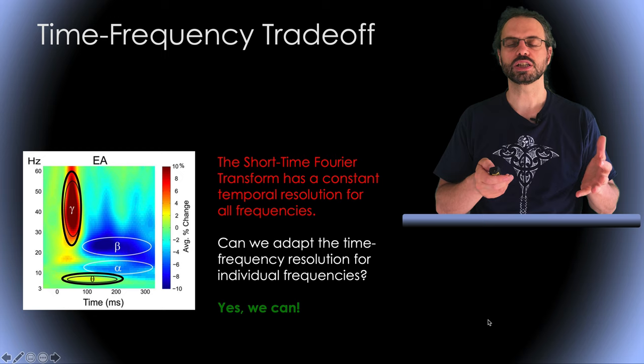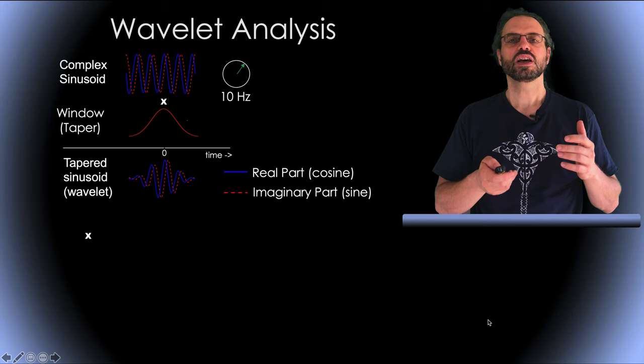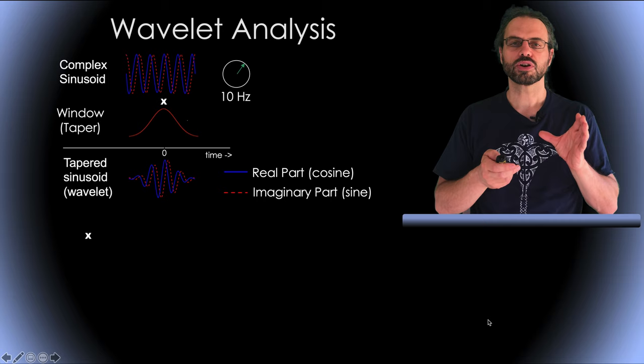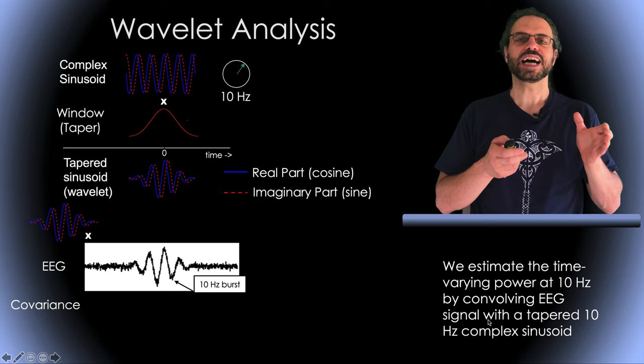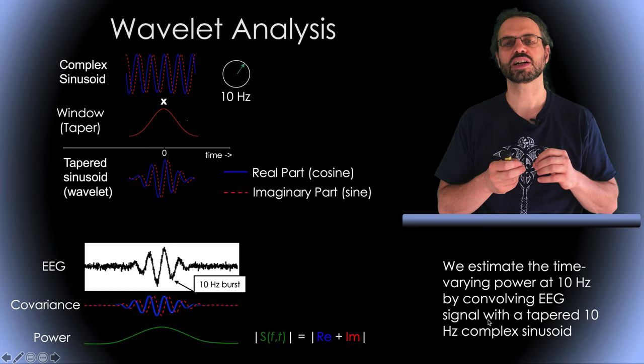As mentioned earlier, we can compute the Fourier transform by convolving the signal with a complex sinusoid at some frequencies of interest. We can taper our sinusoid, for example, with the Gaussian window as represented here, to localize our wavelets in time and reduce Gibbs rippling at the edges. Then at each time point, we correlate the signal with this wavelet as shown here.